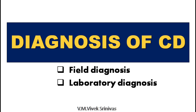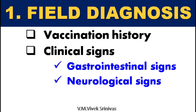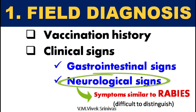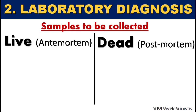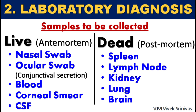Diagnosis can be done at the field level or in laboratories. Field diagnosis is based on vaccination history and clinical symptoms such as gastrointestinal and neurological signs in young animals. Note that some clinical symptoms like paralysis and increased salivation are also observed in rabies and can be difficult to distinguish. For laboratory diagnosis, samples collected from live animals include nasal swab, ocular swab (conjunctival secretions), blood, corneal impression smears, and cerebrospinal fluid. From dead animals, spleen, lymph node, kidney, lung, and brain tissues are collected.